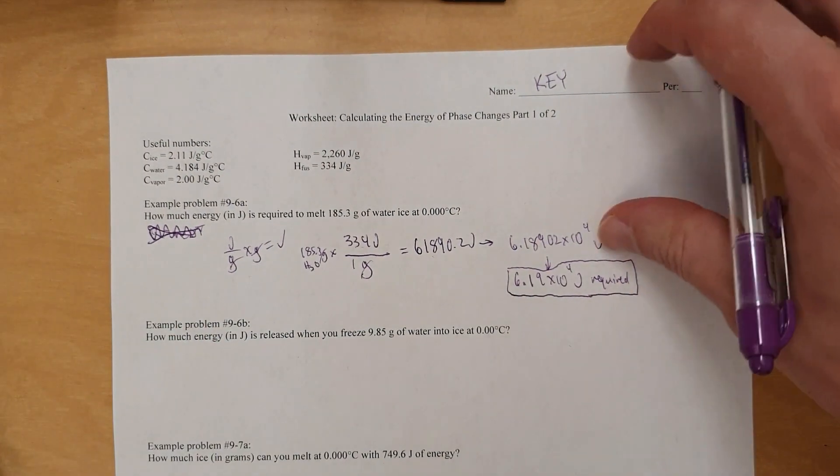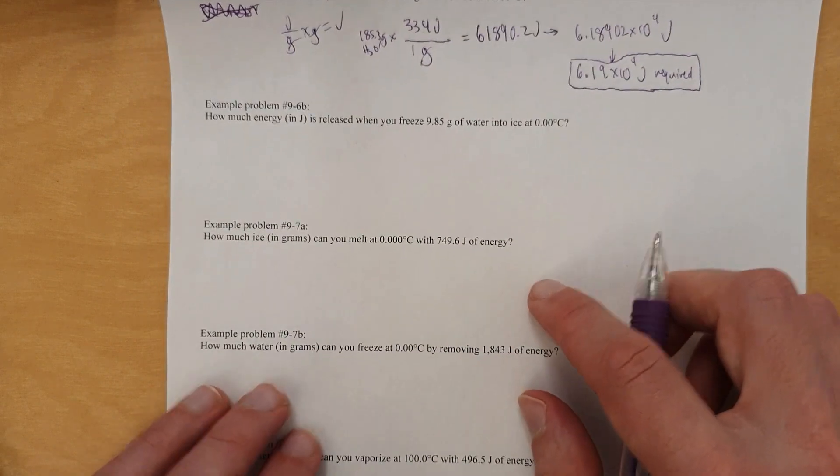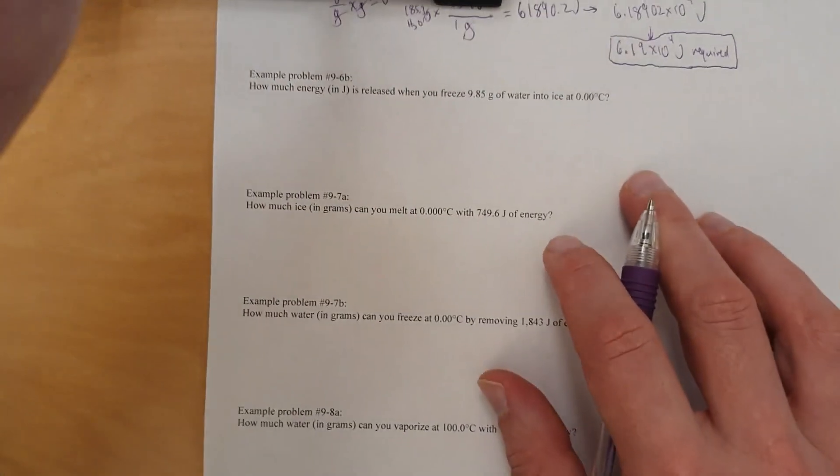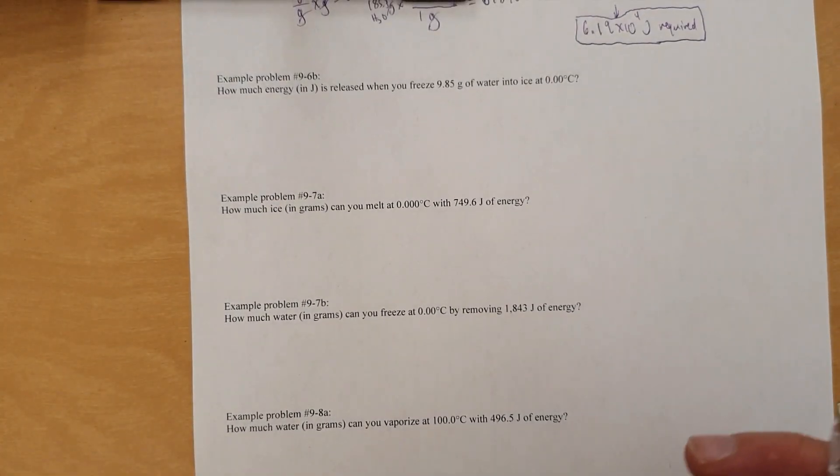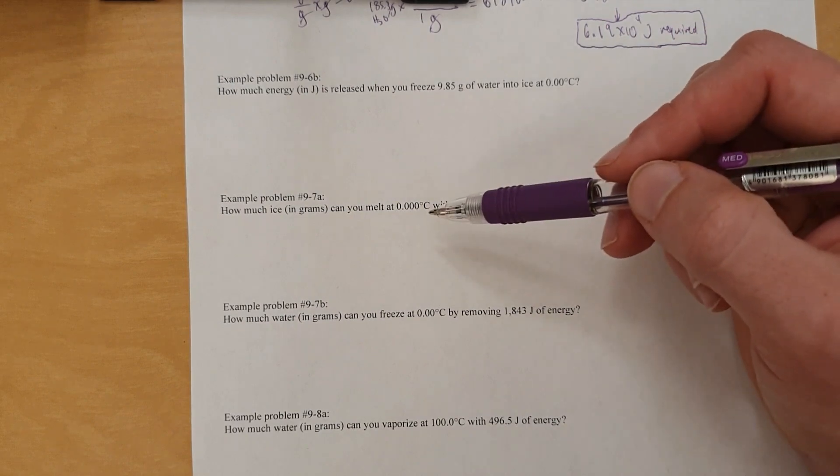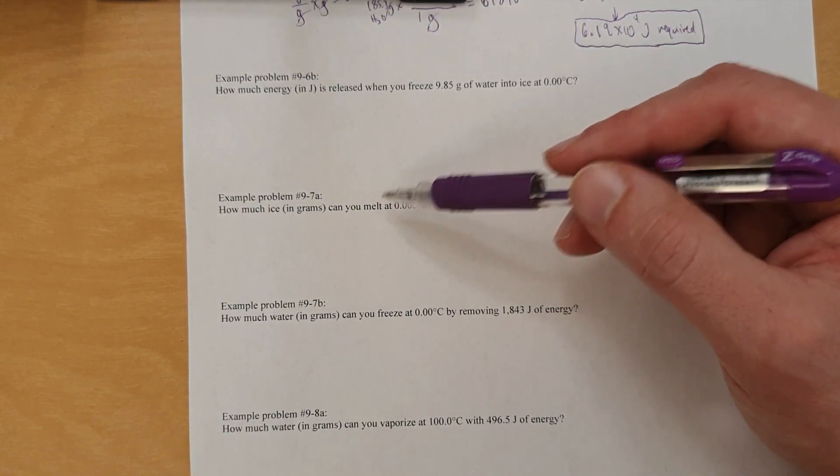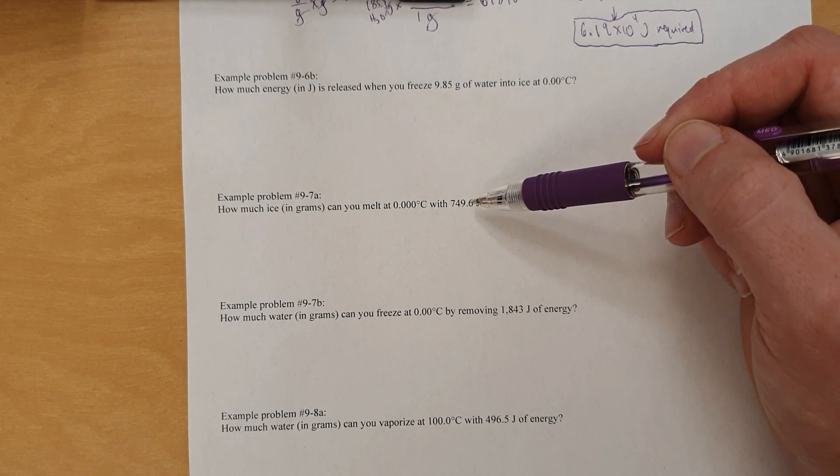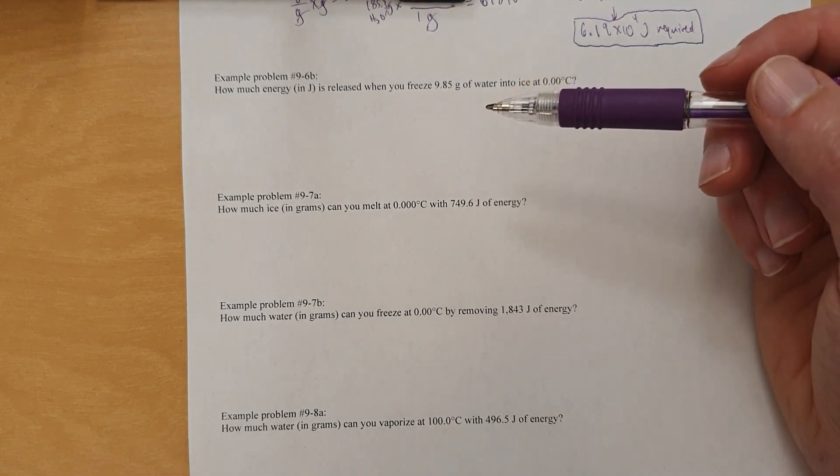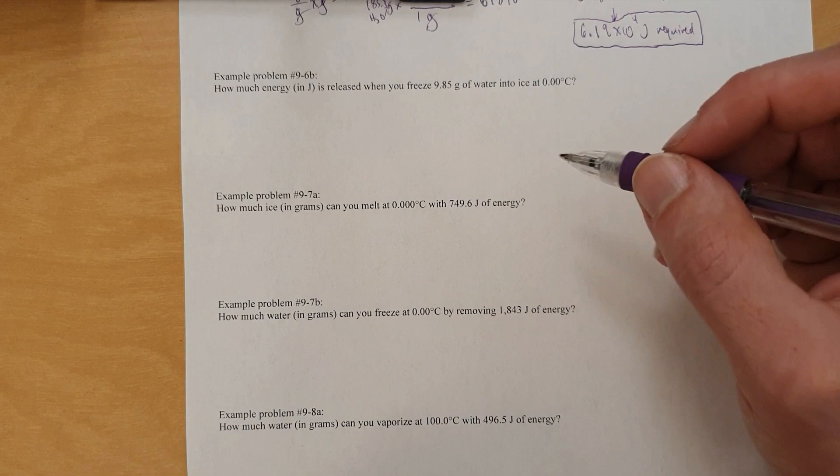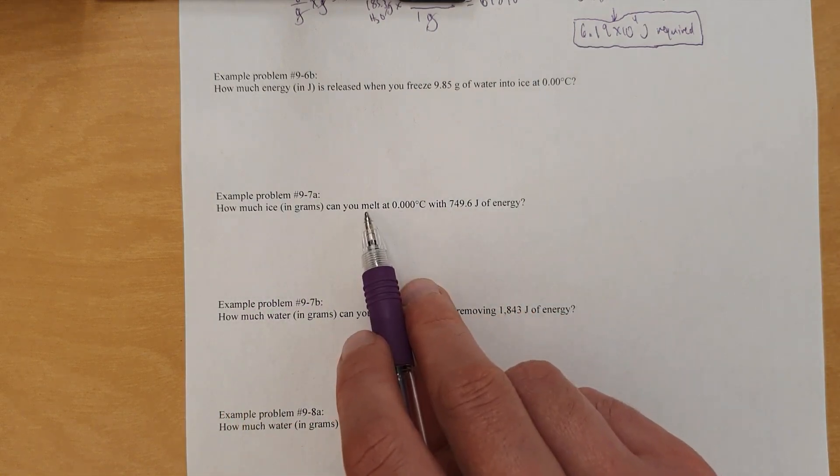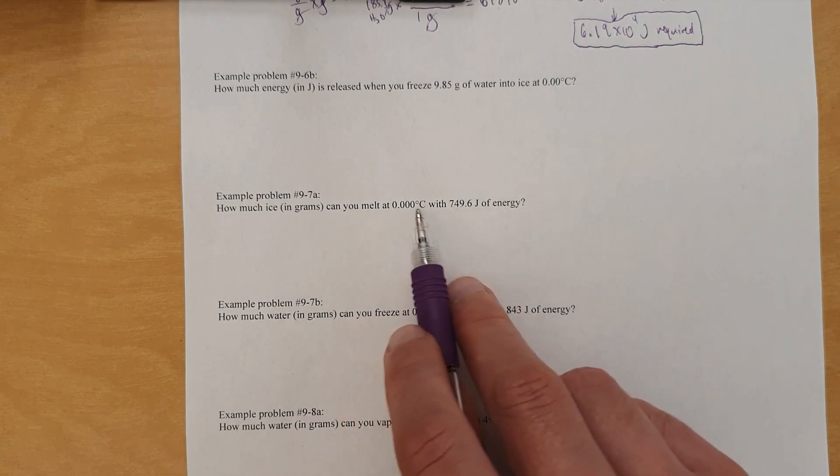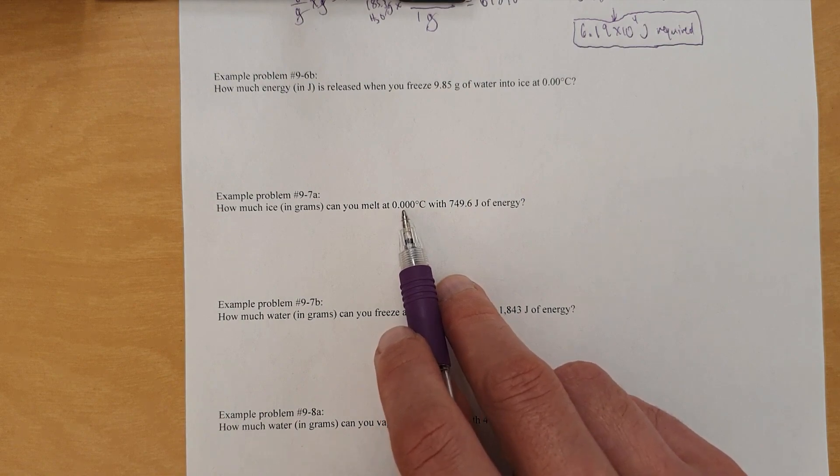Alright, let's look ahead at some other examples. Maybe I'll do this to make it easier to maneuver the paper. Okay, so we will do 9.7a. How much ice in grams can you melt with that many joules of energy? So you can do the same thing. You are going to notice no Q equals mc delta t because it talks about a phase change. Never use Q equals mc delta t when you see this. And then also, no change in temperature. That's another reason you know not to use Q equals mc delta t.